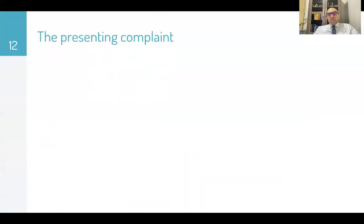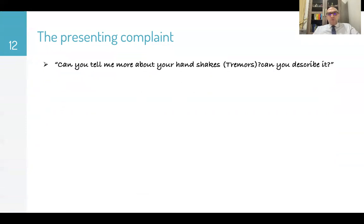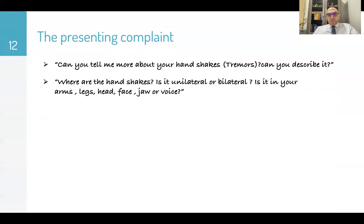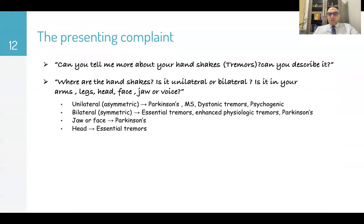Start with the present history and presenting complaint: 'Can you tell me more about your handshakes? Can you describe it? Where are the handshakes — is it unilateral or bilateral? Is it in your arms, legs, head, face, jaw, or voice?' For unilateral or asymmetric tremors, think Parkinson's, multiple sclerosis, dystonic tremors, or psychogenic. If bilateral, usually essential tremors, enhanced physiologic tremors, or Parkinson's. Jaw or face suggests Parkinson's; head suggests essential tremors.